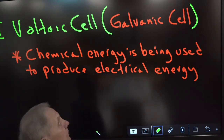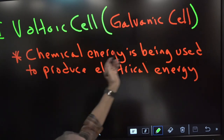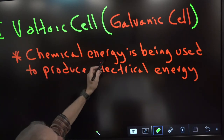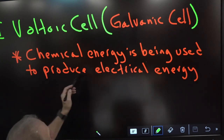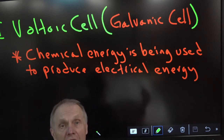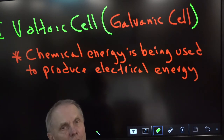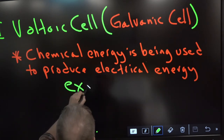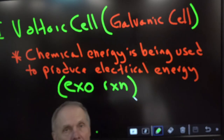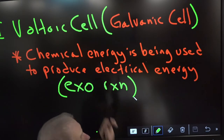The cell we're going to be talking about today is called the voltaic cell — another name is the galvanic cell. The big deal about this cell is that chemical energy is being used to produce electrical energy. Chemical energy is being changed to produce electricity, and since we're producing electricity this is an exothermic reaction.